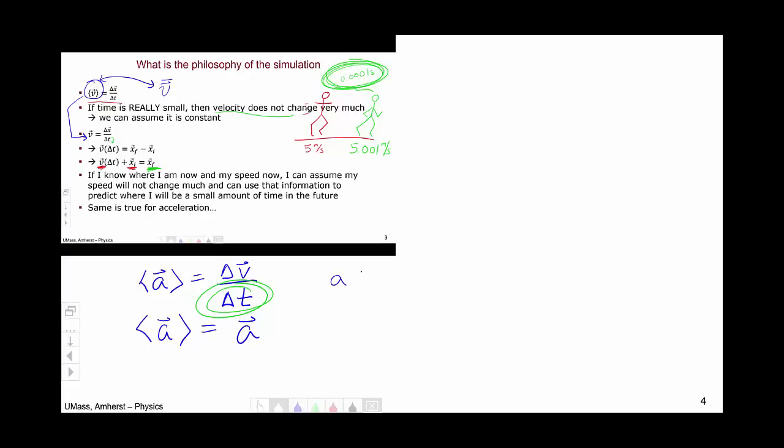So now I'm just going to have acceleration is delta V over delta T. Do a little bit of algebra. A times delta T is delta V. Delta V is V final minus V initial. So that's going to be A delta T. And V final is V initial plus A delta T.